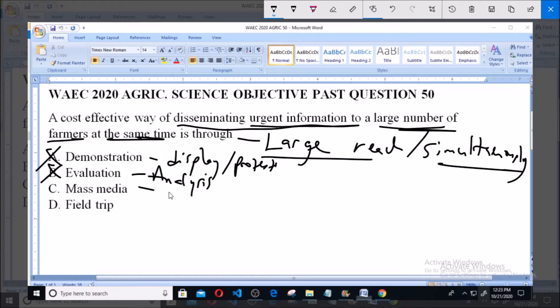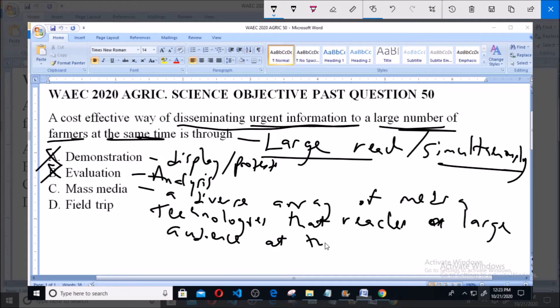Option C says Mass Media. Mass Media refers to a diverse array of media technologies that reaches a large audience at the same time.